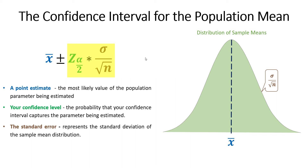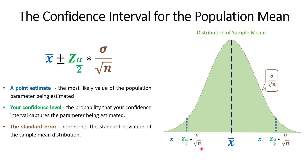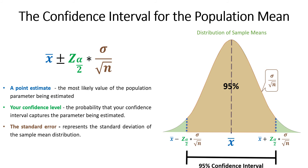The back half of the equation — the z-score times the standard error — is called the margin of error. The full expression is x-bar plus or minus the margin of error. Graphically, on the right half of the distribution we take x-bar and add the margin of error; on the left half we subtract the margin of error. The width of this interval is that 95% confidence level, capturing 95% of the sample mean distribution.